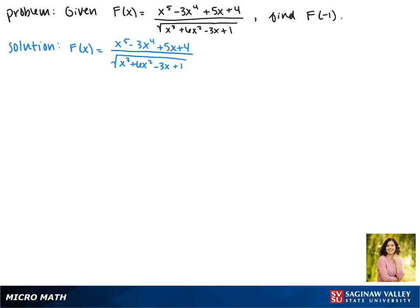We'll start by plugging in -1 everywhere we see an x. This gives us (-1)^5 - 3(-1)^4 + 5(-1) + 4, all divided by the square root of (-1)^3 + 6(-1)^2 - 3(-1) + 1.